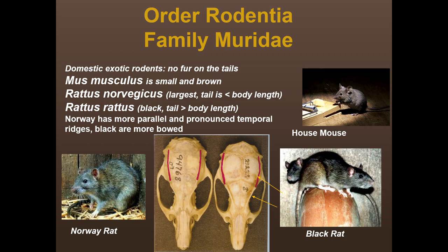You can also tell these two rat species apart by skull, though this isn't covered in the skull video. The Norway rat has more parallel and pronounced temporal ridges, while the black rat has bowed-out ridges. When you have them side by side in person, it's really easy to see the difference between those two skulls.